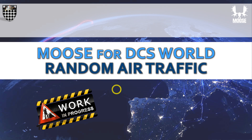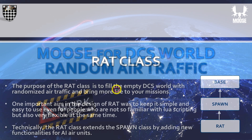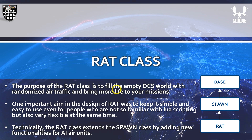The following episodes will cover more detailed examples to illustrate the various options. RUT is a known class within the MOOSE framework which derives from the spawned class, and its main purpose is to fill the DCS sandbox with some more life. One important aspect in the design of RUT was to keep it simple and easy to use, even for people who are not so familiar with Lua scripting, but also to be very flexible at the same time.